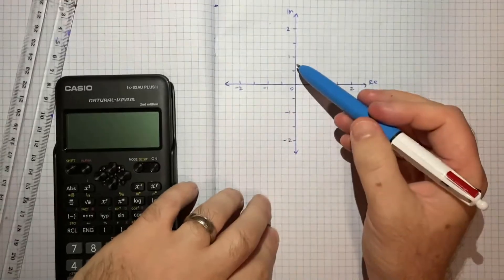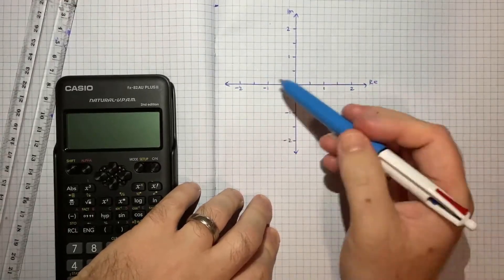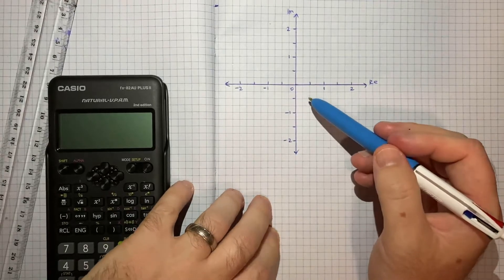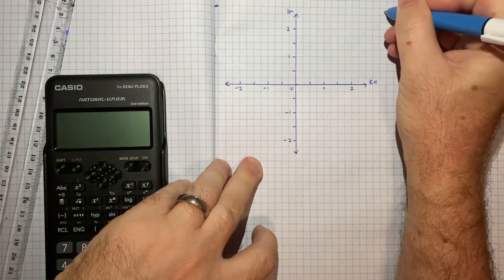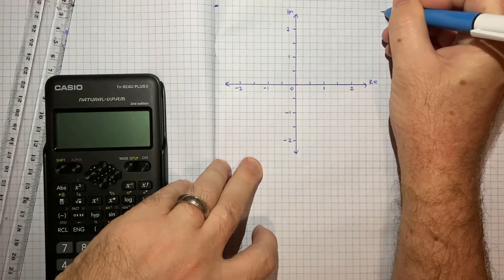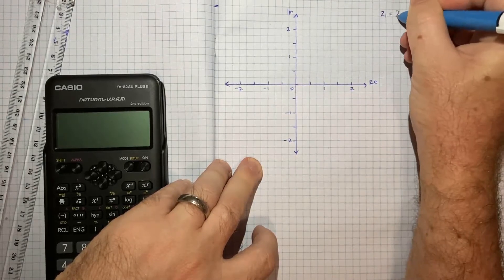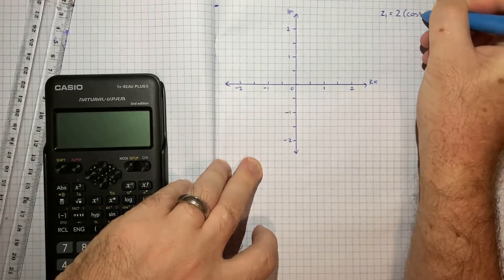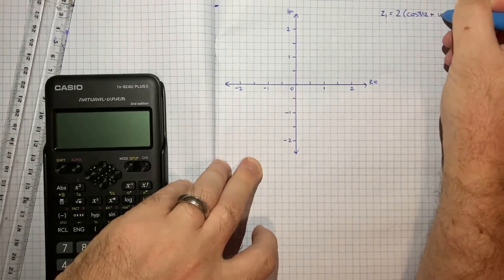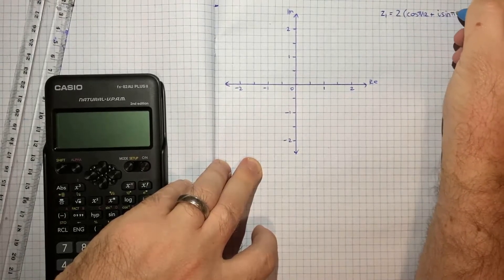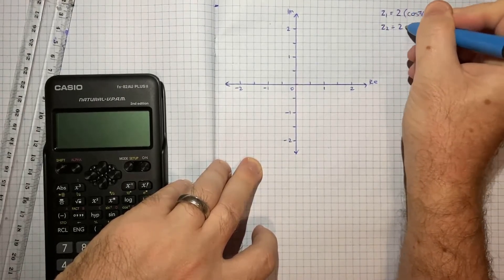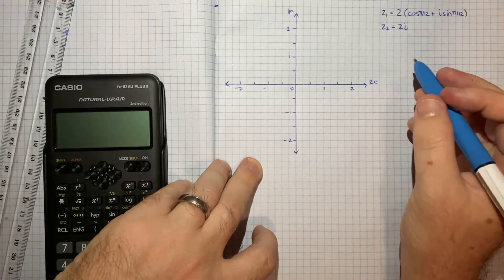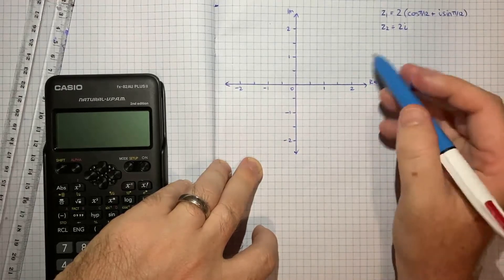So what I've done here is I've drawn up an Argand diagram, because that's going to be the core of what we do in this question. We're told we're given our two vectors, or our two complex numbers, z1 equals 2 cos pi on 12 plus i sine pi on 12, and then z2 is equal to 2i. So the first part of the question asked us to plot these.